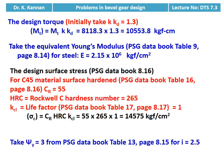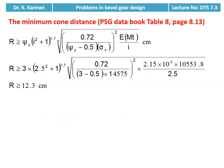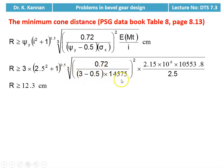We take psi_y = 3 from the PSG data book, table 13, page number 8.15 for i = 2.5. Then we calculate the minimum cone distance using the equation on page 8.13, table 8: R ≥ psi_y × (i² + 1)^0.5 × ∛[0.72 / (psi_y − 0.5) × sigma_C² × E × MT / i]. Substituting numerical values, R ≥ 12.3 centimeter.